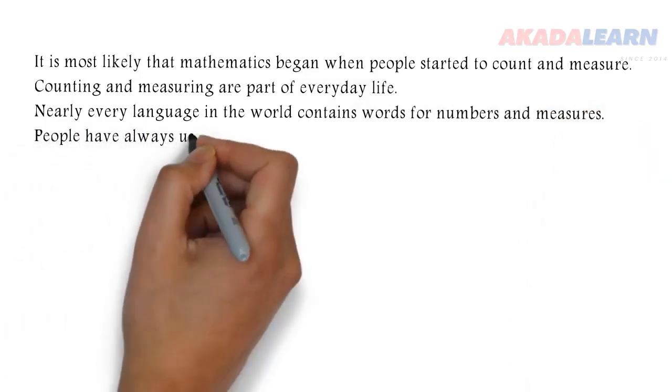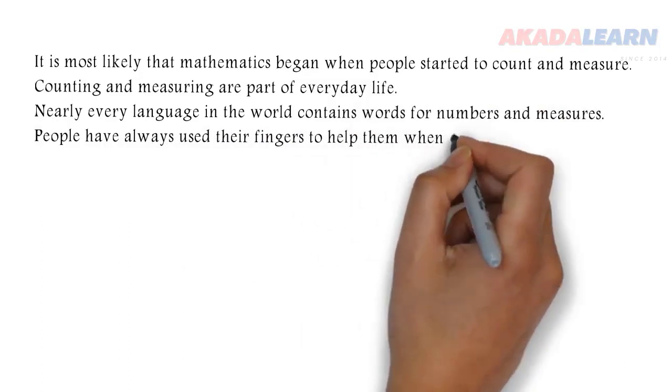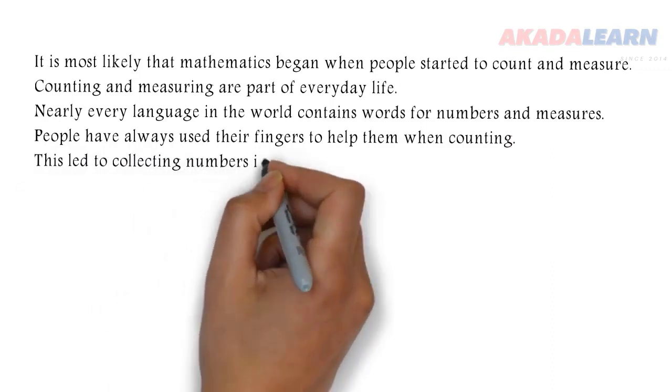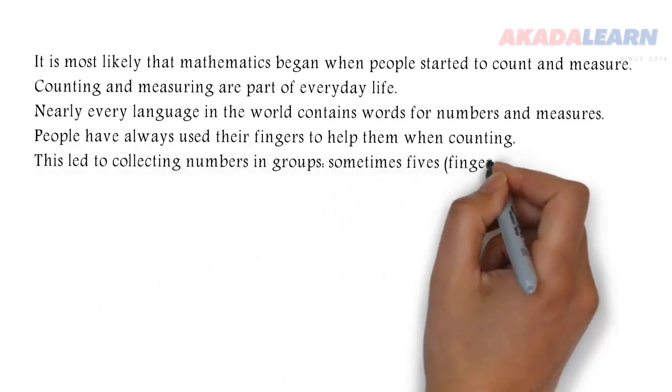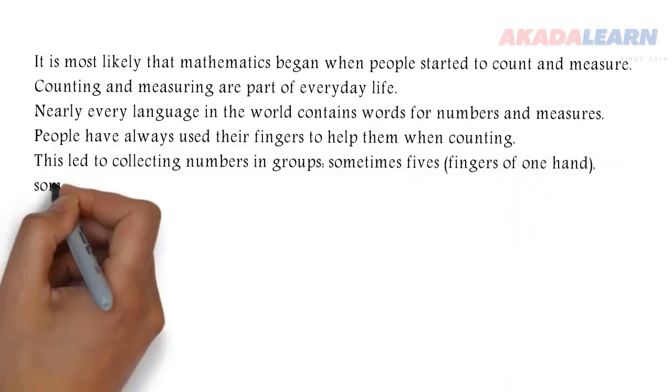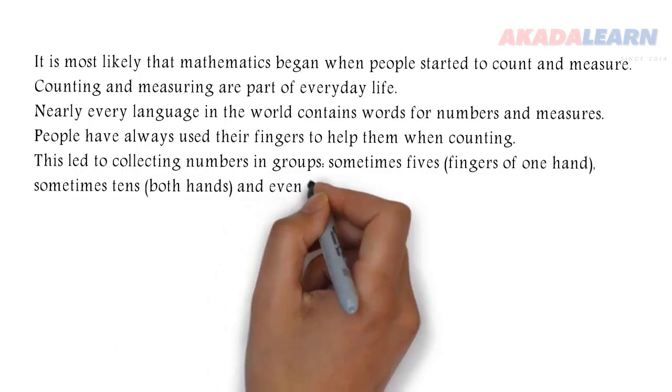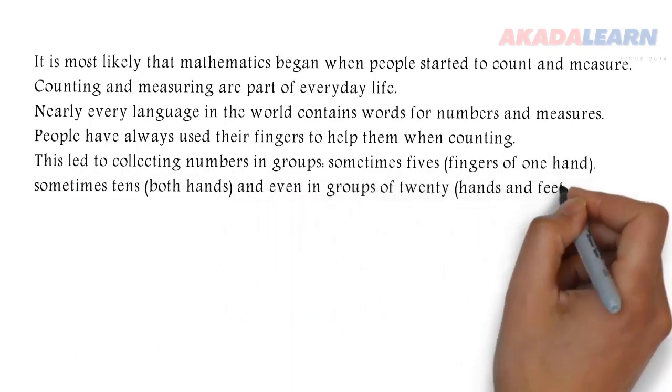People have always used their fingers to help them when counting. This led to collecting numbers in groups, sometimes fives (fingers of one hand), sometimes tens (both hands), and even in groups of 20 (hands and feet).